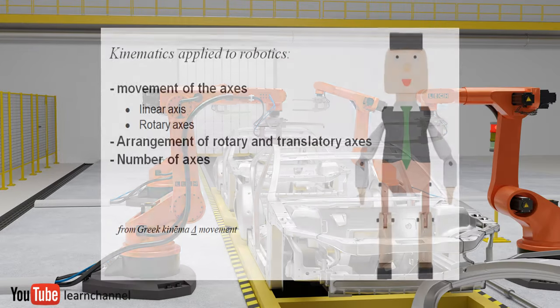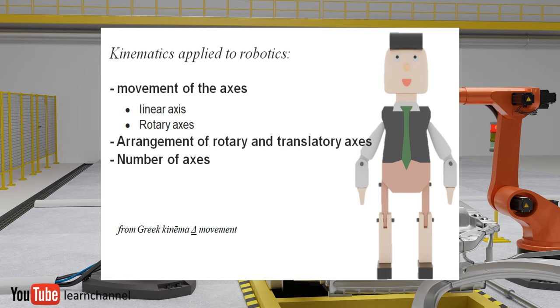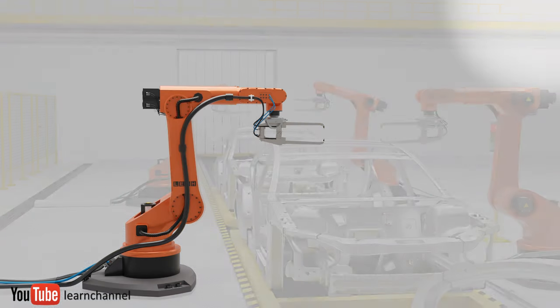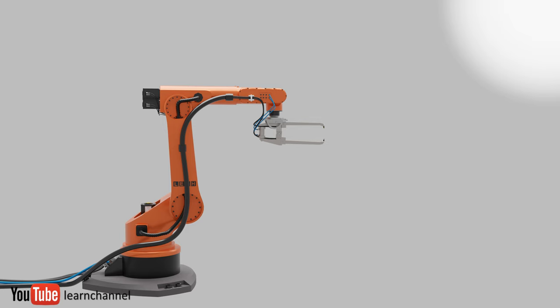Kinematics is a part of mechanics and can be described as a theory of motion. Applied to the robot, this means describing the mechanical structure. Back to our robot.